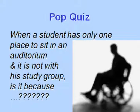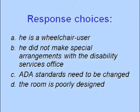I think we're ready for a pop quiz. When a student has only one place to sit in an auditorium and it's not with his study group, is it because: A — he's in a wheelchair; B — he did not make special arrangements with the Disability Services Office; C — the ADA standards need to be changed because we built this building according to standards and it's not fully flexible; or D — the room is poorly designed?